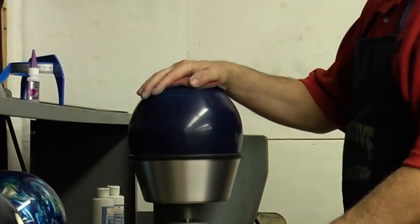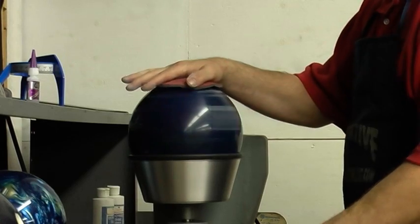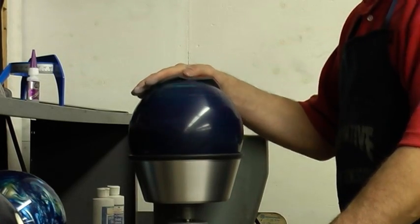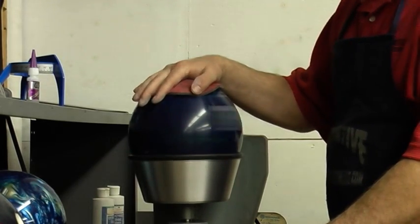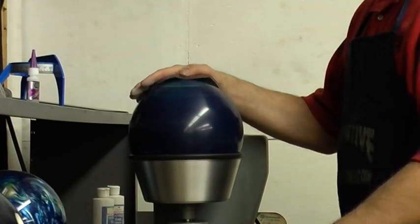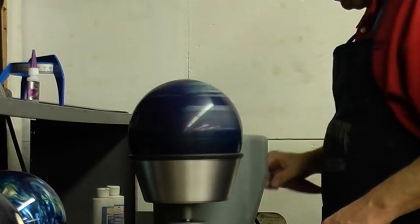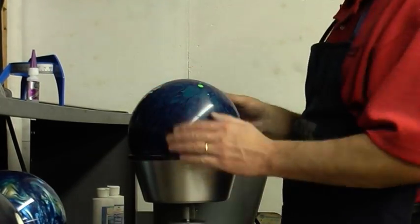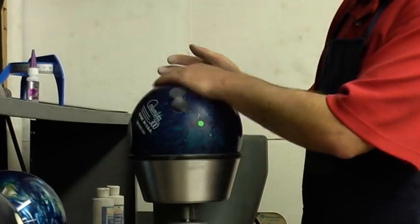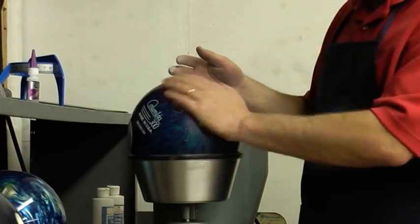And you can use sandpaper. A lot of people are using abralon. Abralons are a bit more expensive, but they cut the ball faster. That's why it cuts down your time in the shop. So it's six of one, half a dozen of the other, whichever way you want to go. And you can actually see that ball, even with sandpaper on it, it's pretty shiny.